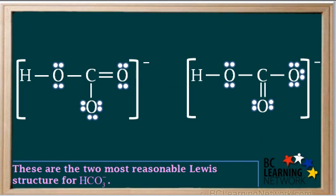So both structures 2 and 3 qualify as the best Lewis structures. These are the most reasonable Lewis structures for the bicarbonate ion HCO3-. Since we are just focusing on these two structures now, we will call the one on the left structure 1 and the one on the right structure 2.